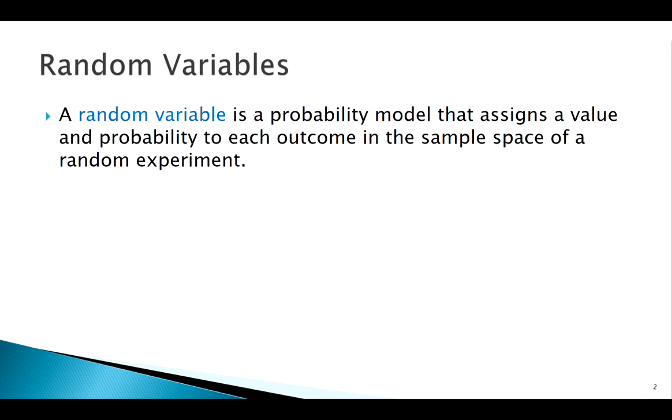A random variable is a form of a probability model. It's thinking about a situation, outlining it, and saying, okay, here are the potential values that this variable could take on, and how do I assign a probability to each of those values?